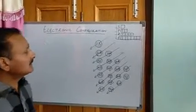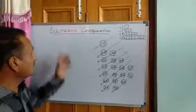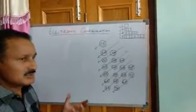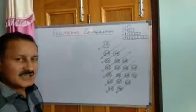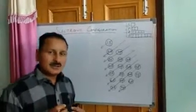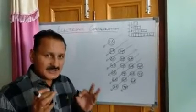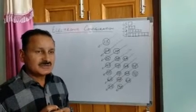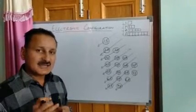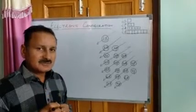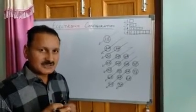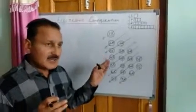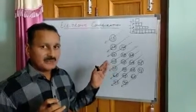Students, today we shall take up your new topic, that is electronic configuration. Now before going to electronic configuration, let us know something about an atom. An atom, as you know, is a tiny particle of an element. That atom contains electrons. Now the question is where these electrons are exactly located in an atom. For that purpose we have already studied quantum numbers, but here we will tell you the exact location of your electrons.